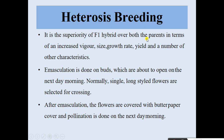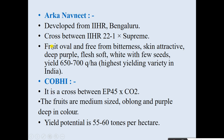The heterosis breeding method exploits the superiority of F1 hybrids over both parents in terms of increased vigor, size, growth rate, yield, and other characteristics. Emasculation is done on buds about to open the next morning. Normally, single long-style flowers are selected for crossing. After emasculation, the flowers are covered with a butter paper bag, and pollination is done the following morning.